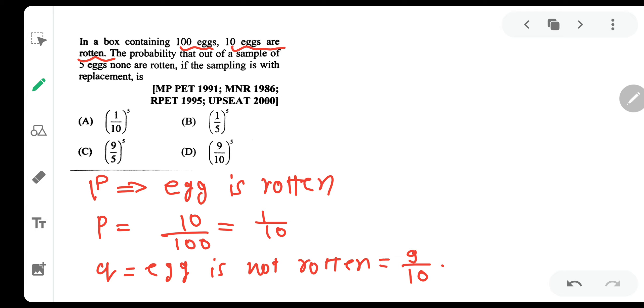Now they have asked us that 5 eggs are selected. So N is equal to 5. So we have N equals 5, P equals 1 by 10, and Q equals 9 by 10.